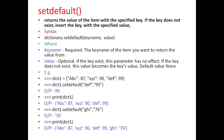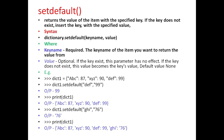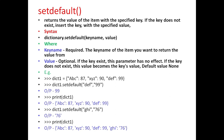Next is setdefault. This method returns the value of the item with the specified key. If the key does not exist, it inserts the key with the specified value. The general syntax is dictionary.setdefault with key name and value as parameters, where key name is a required parameter specifying the key name of the item you want to return the value from, and value is an optional parameter — if the key exists this parameter has no effect, if the key does not exist this value becomes the key's value, default is None.